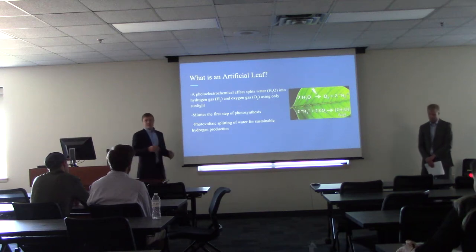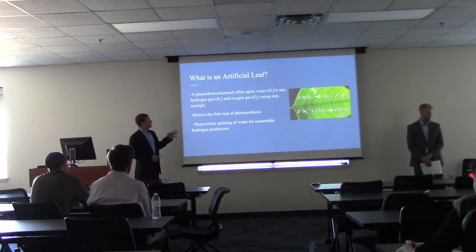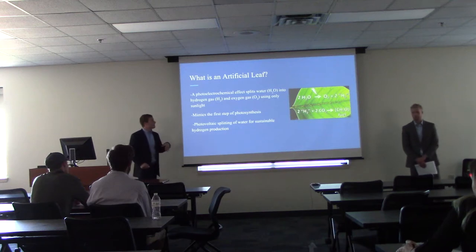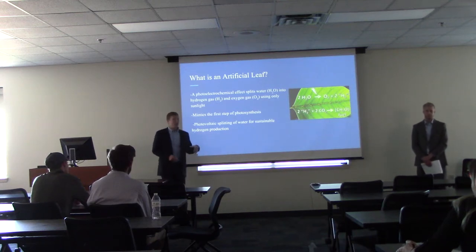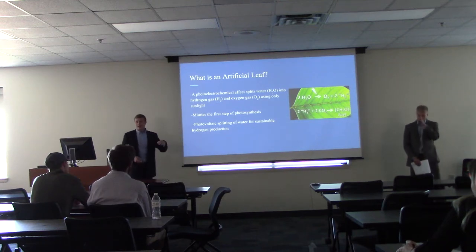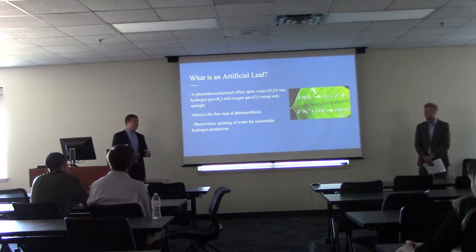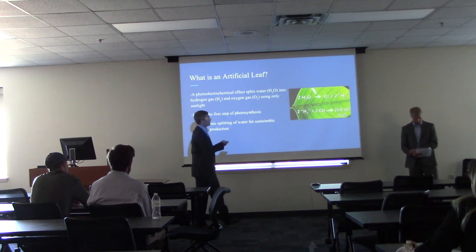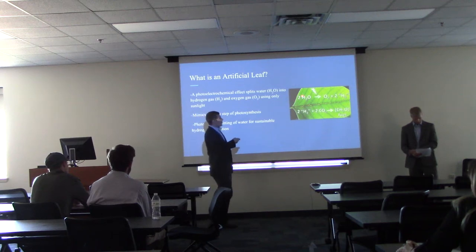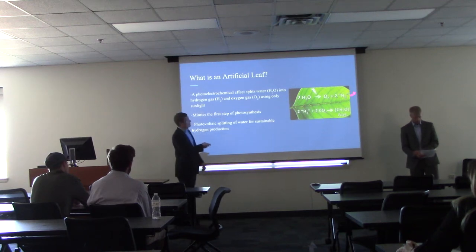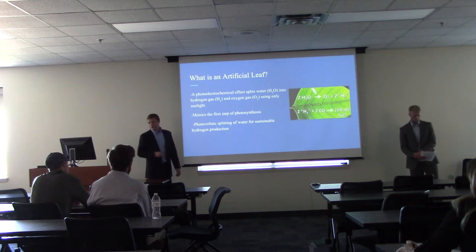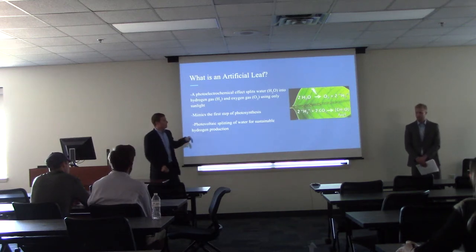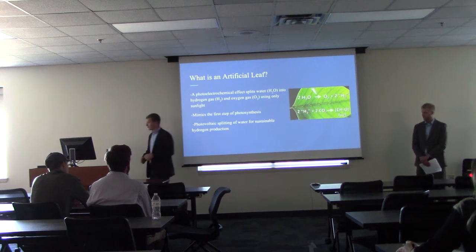An Artificial Leaf is a photo-electrochemical process that splits water into hydrogen gas and oxygen gas, done by only using sunlight. This mimics the first step of photosynthesis — you take a water molecule, add a little sunlight, and get a byproduct of oxygen and hydrogen. This promotes the photo-intake splitting of water and can be used for sustainable hydrogen production.